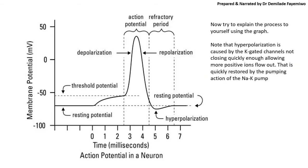I usually tell my students, after they've watched the animation — or worked through the slide deck at their own pace — to try to fit the sequence of events onto the action potential graph, because that graph is most likely to come up in exams. At resting potential we have the sodium-potassium pump: three sodiums go out and two potassiums come in. Because sodium and potassium are both plus one in charge, we lose one net positive charge inside the axon each cycle.